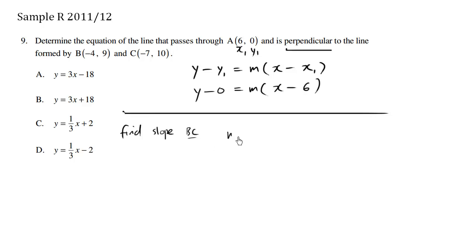To find a slope, the slope of BC equals rise over run, which is y2 minus y1 over x2 minus x1. So as long as we subtract in the same direction, we're going to be okay. We'll make this our x2, y2 value and this our x1, y1 value. So the slope is going to be y2 minus y1, which is 10 minus 9, equals 1, over x2 minus x1, which is negative 7 minus negative 4.